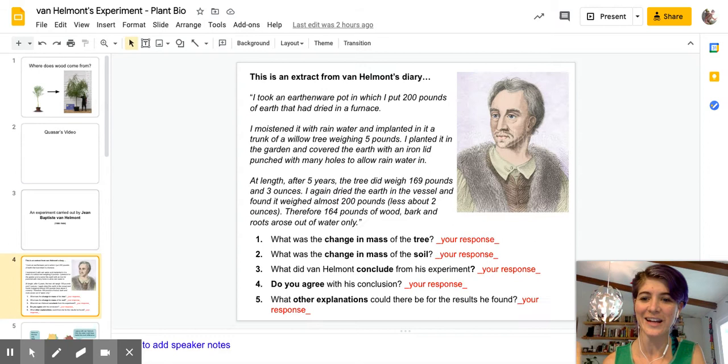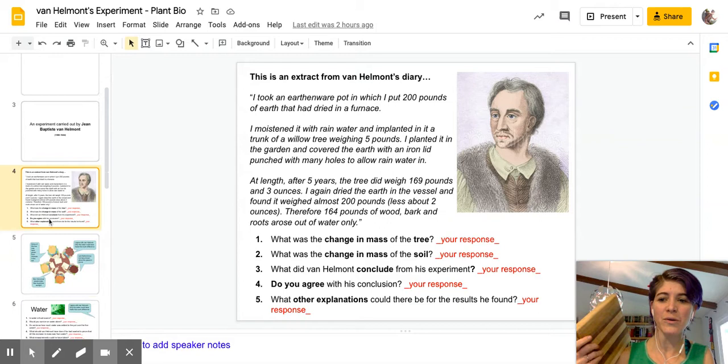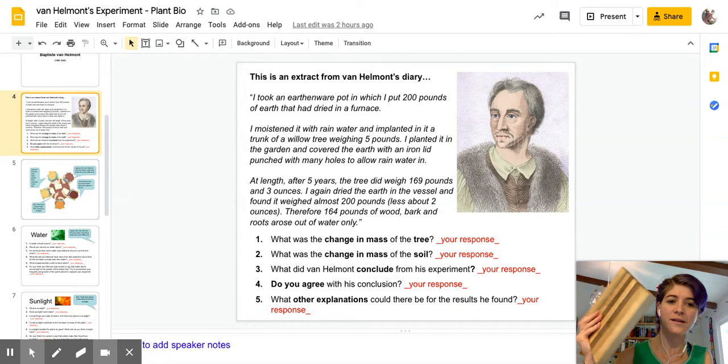And then you're going to think about where did the mass that the tree used to make this wood come from ultimately. So there are four things that you're going to explore in terms of where, like possibly, that mass could have come from.